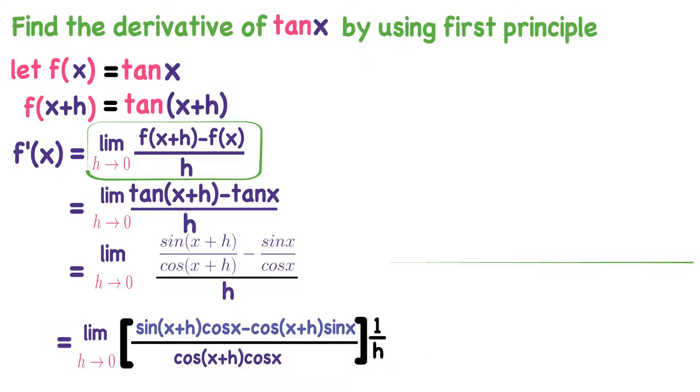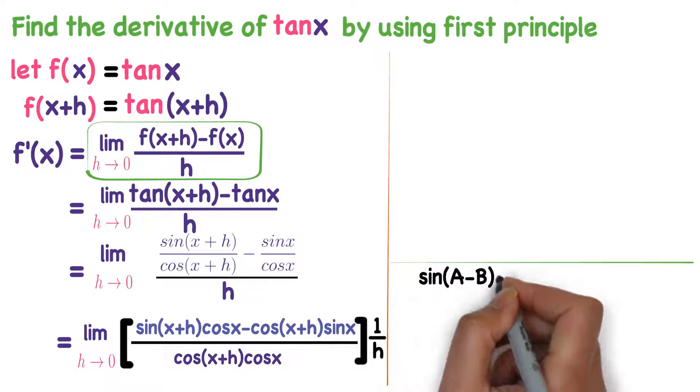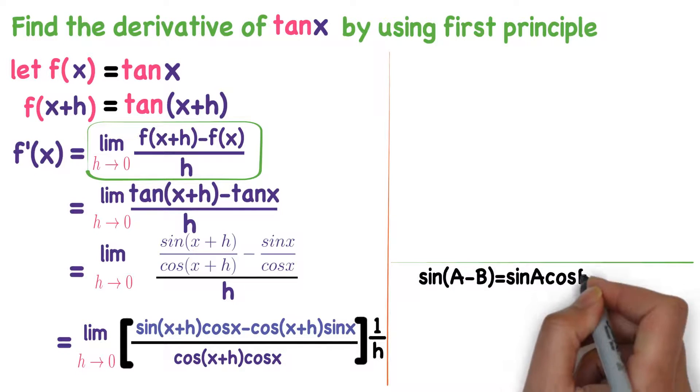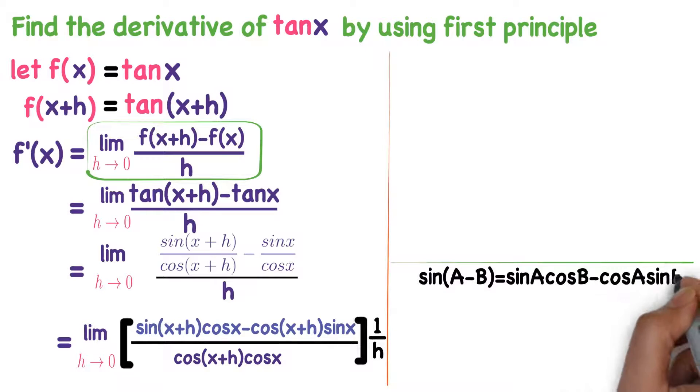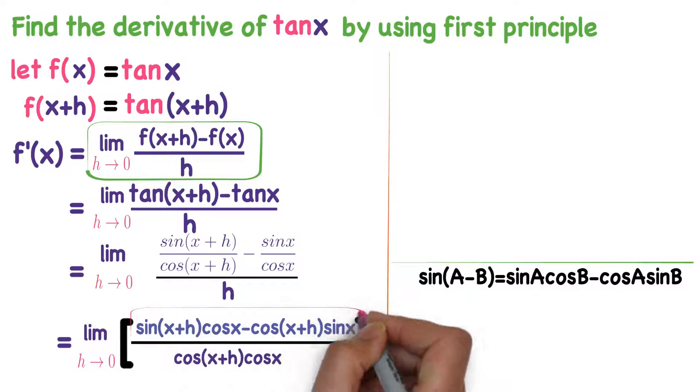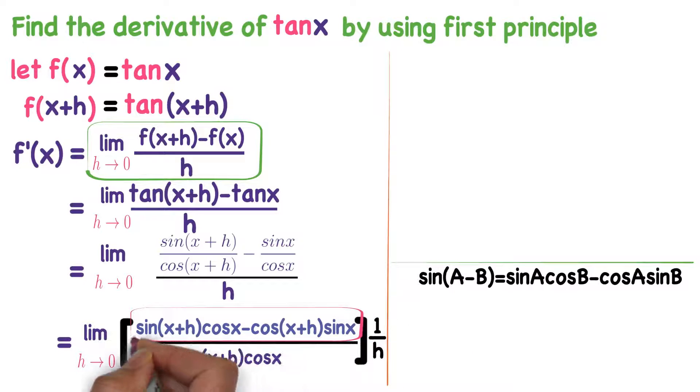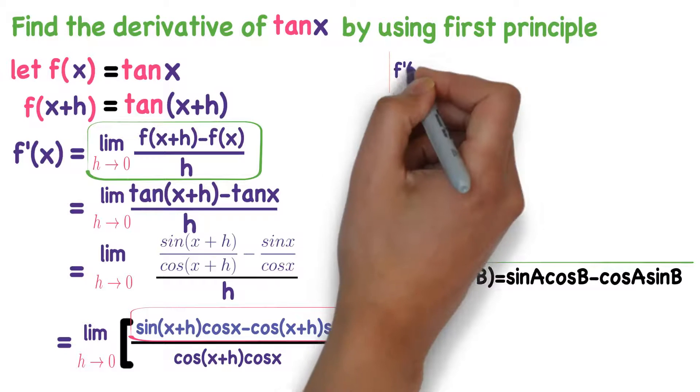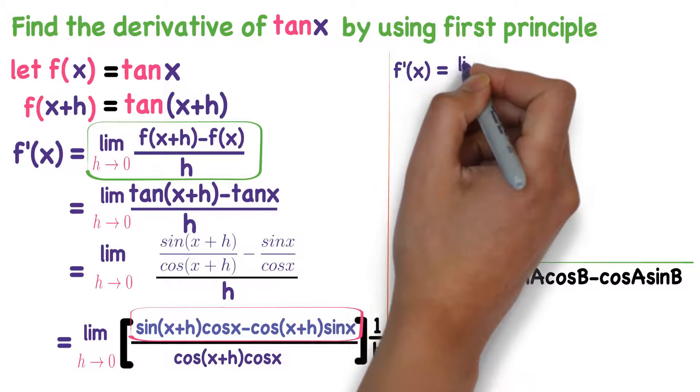It can be understood easily from the above step. Now we know the formula of sin(A-B). Sin(A-B) formula is sin A cos B minus cos A sin B. You observe this. This expression is similar to sin A cos B minus cos A sin B. So what is A? A is x+h. What is B? B is x.